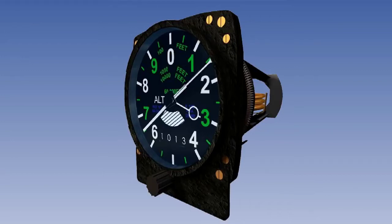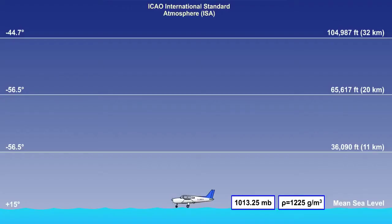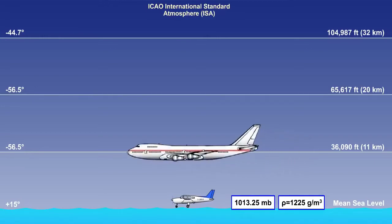ISA conditions assume the following. Firstly, that mean sea level pressure is 1013.25 millibars, or hectopascals, and the temperature is plus 15 degrees Celsius, while the air density is 1225 grams per cubic metre. Secondly, that from mean sea level up to 36,090 feet, or 11 kilometres, temperature is assumed to reduce by 1.98 degrees Celsius per 1,000 feet, or 6.5 degrees Celsius per kilometre.